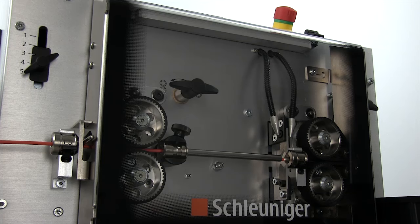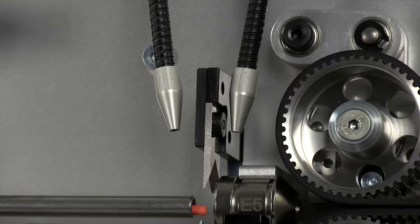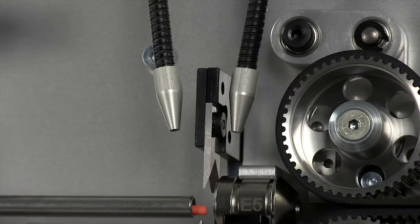Les autres accessoires disponibles comprennent une lumière intégrée ainsi qu'une unité de jet d'air pour le nettoyage des lames, un coffre pour les outils et une gamme de redresseurs de fil.